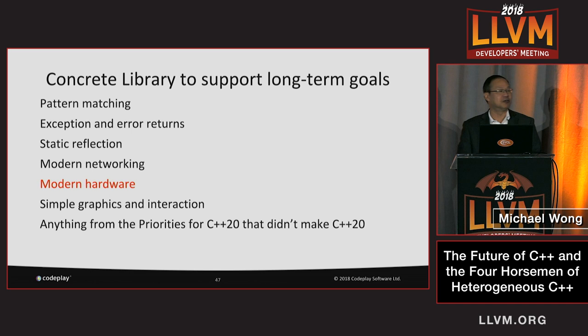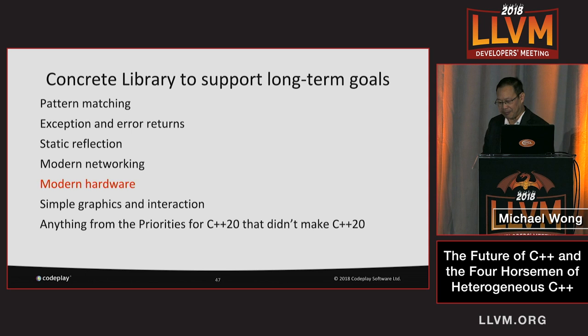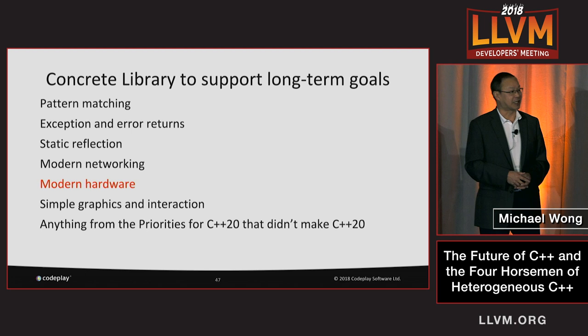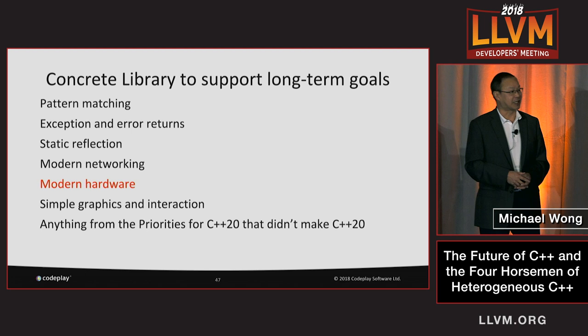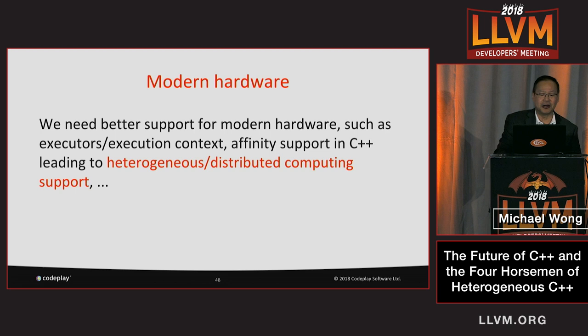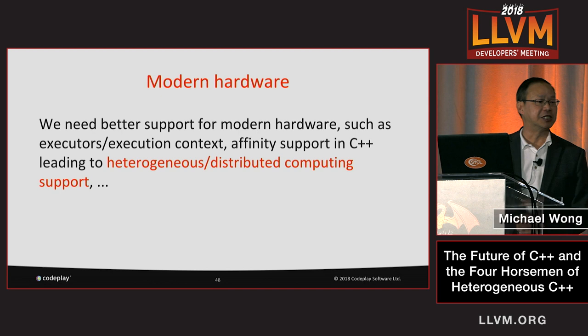The last thing I want to highlight from the C++ standard directions document is its concrete suggestions for long-term goals: things like pattern matching, exception and error returns, static reflection, modern networking — there's a networking proposal that hopefully works with executors. It also adds modern hardware and simple graphics interactions. On modern hardware, the key statement says we need better support for modern hardware, such as executors, execution contexts, and affinity, leading ultimately to heterogeneous and distributed computing support. So there you have it: a clear direction towards heterogeneous distributed C++ for ISO C++'s future.